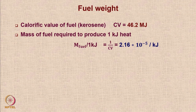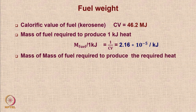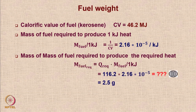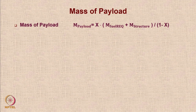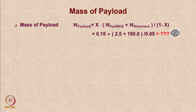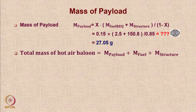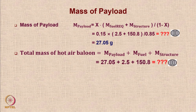For fuel weight: the mass of fuel required to produce 1 kilojoule of heat is 1 divided by the calorific value — that is the definition of calorific value. The minimum fuel mass required to produce the needed heat comes out to be only 2.5 grams. The mass of payload is expressed as a fraction of total weight. With a structural weight of 2.5 plus 150.8 grams, and keeping the 15 percent payload fraction, the payload mass is 27.05 grams.